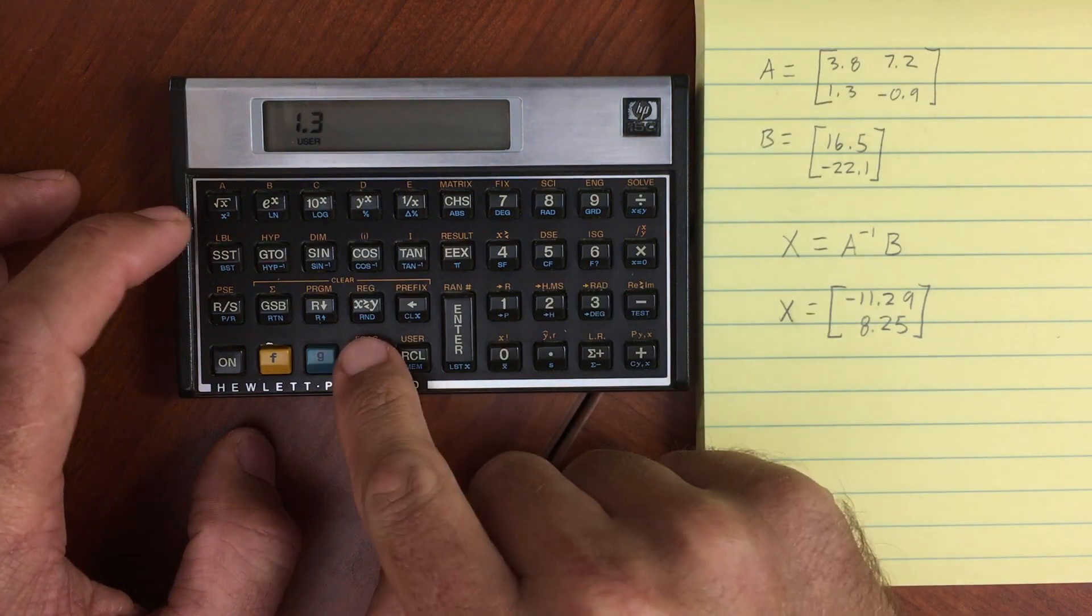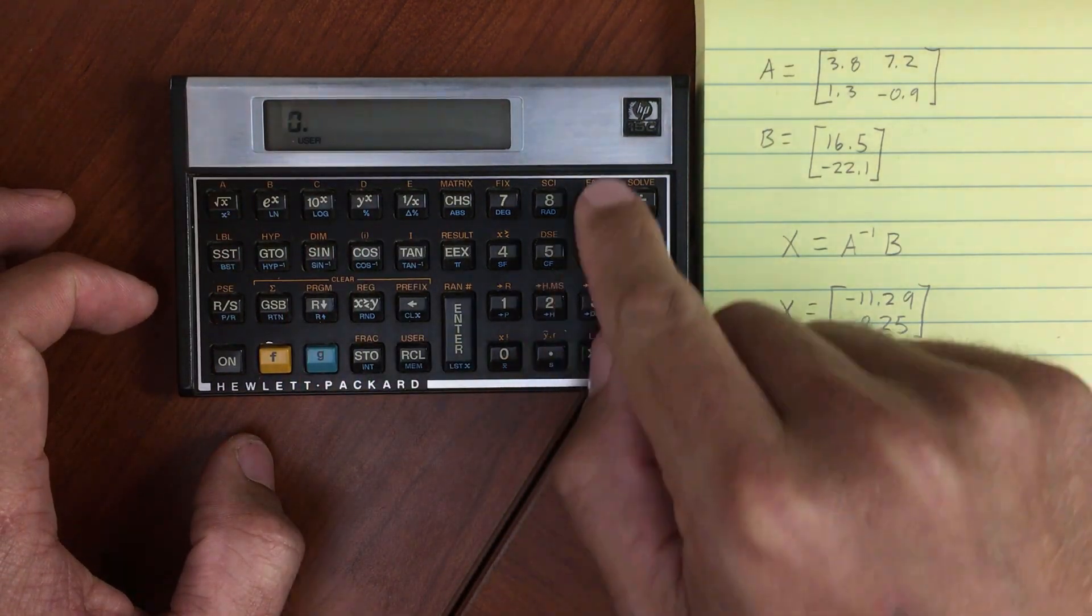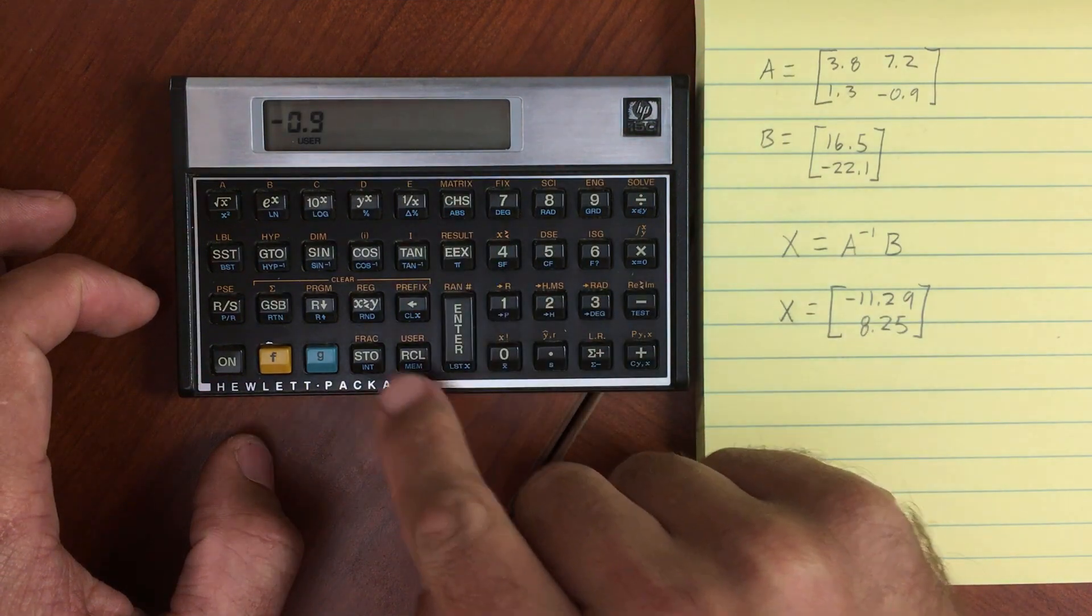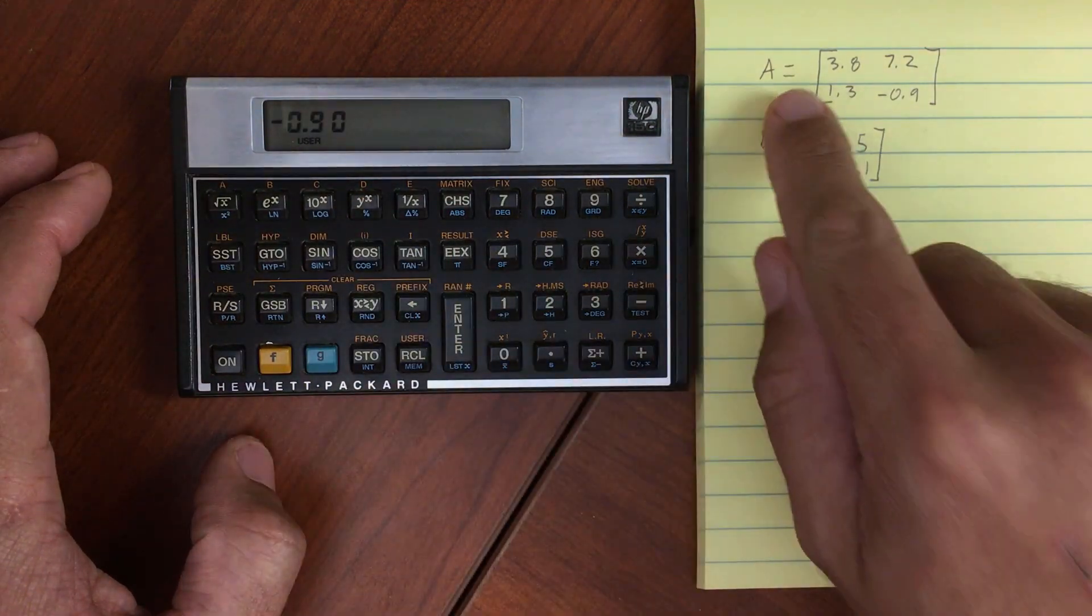1.3. Store that in A, 2,1. And 0.9. Store that in A, 2,2. All right, so we have matrix A entered.